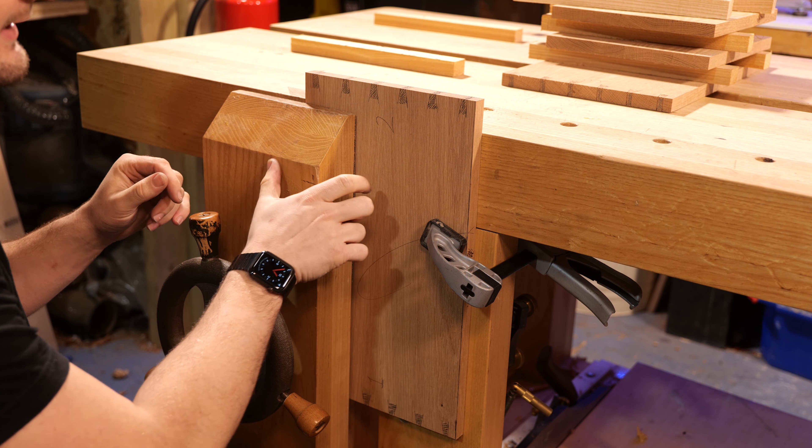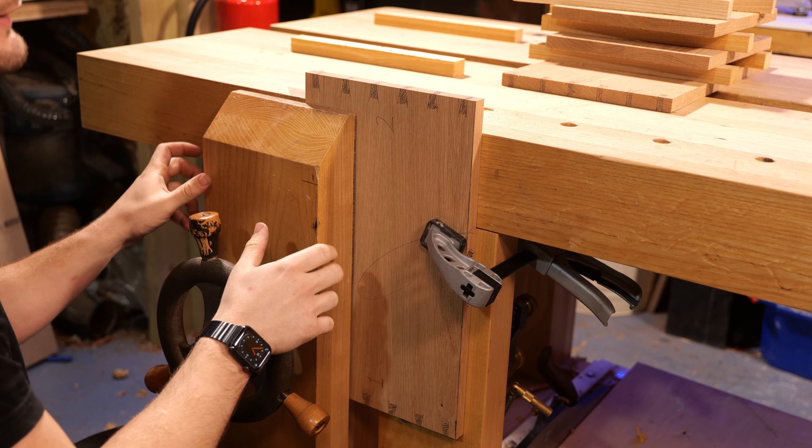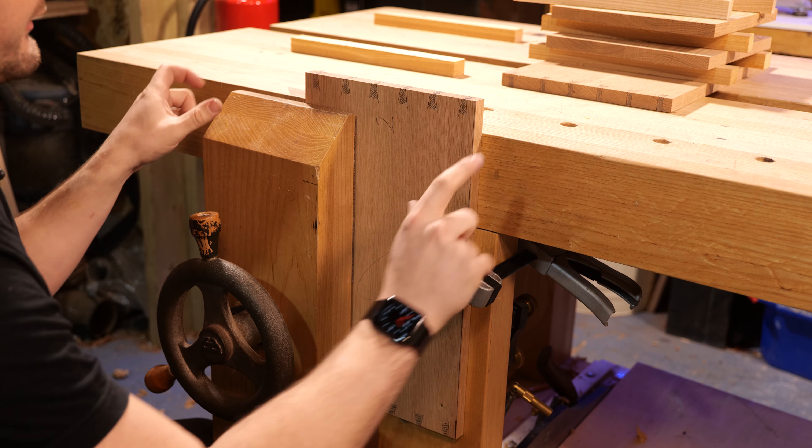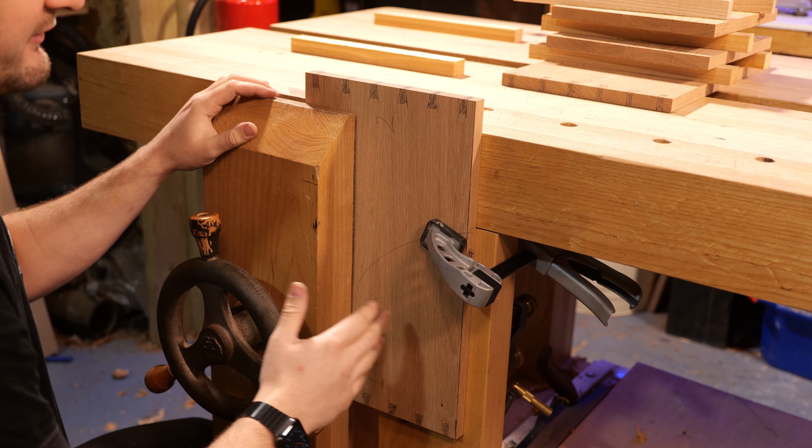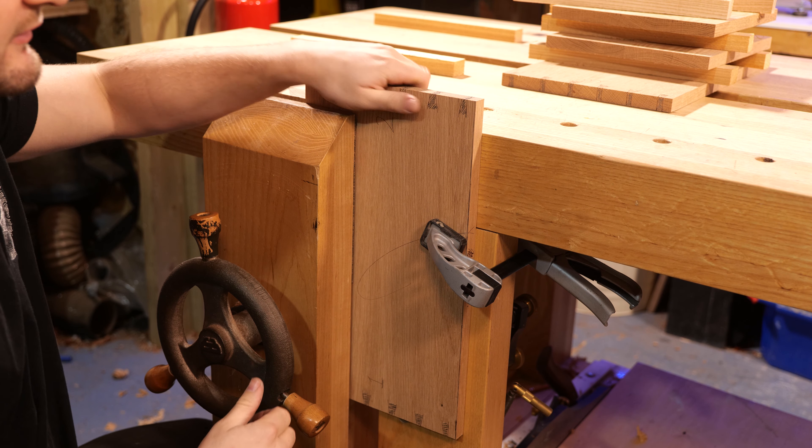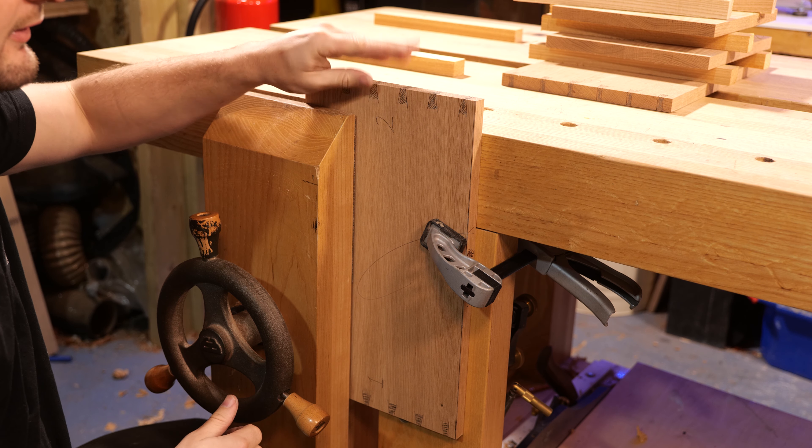The main thing to take from this is just ensure that whatever area you're working on is fully supported. If you're using a quick release, that might involve clamping it on the right hand side of the vice and then the left hand side. Just make sure that it's not going to vibrate at all while cutting these tails because it's quite thick material.